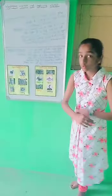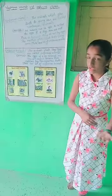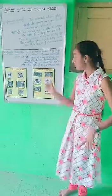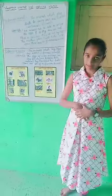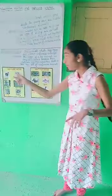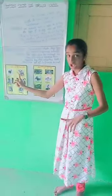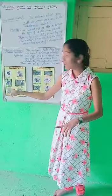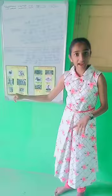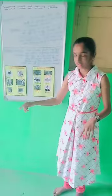Now I am going to tell some names of viviparous animals and oviparous animals. In the viviparous animals: goat, calf, human, monkey, cat, and dog.